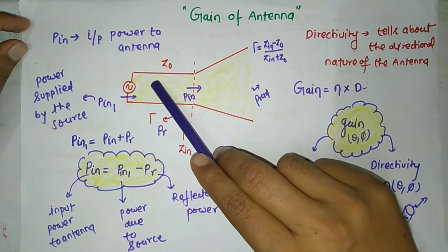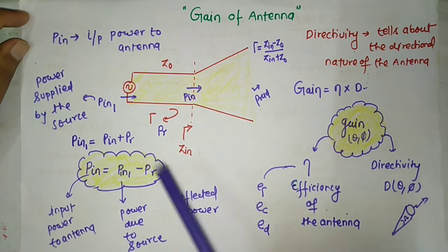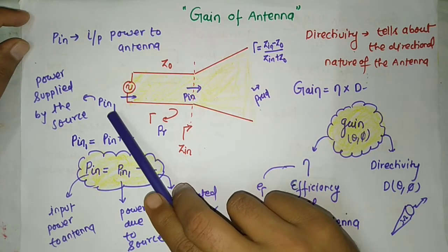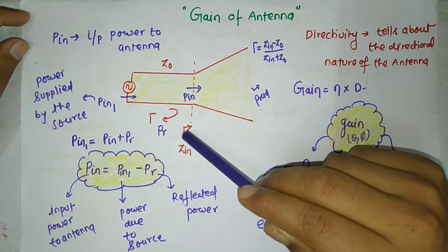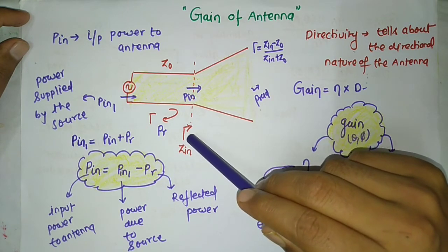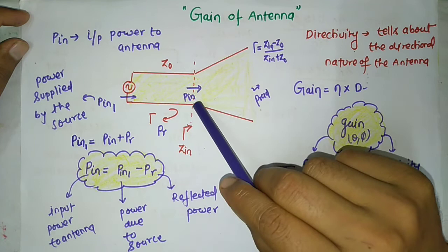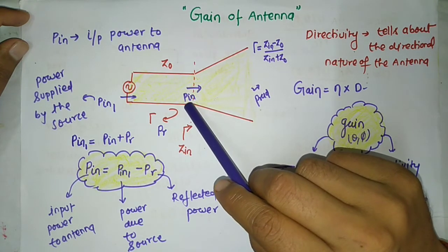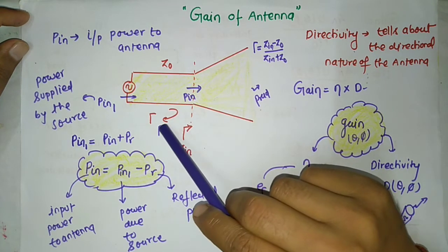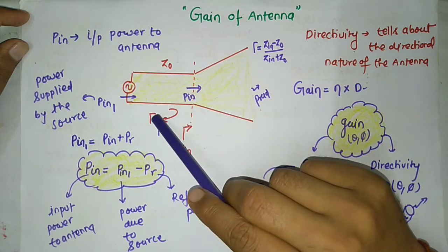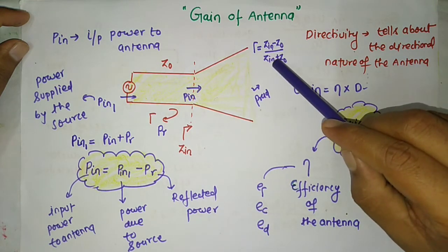The function of the transmission line is to guide power or energy along its length. Suppose the source is generating power P_in. If the antenna's input impedance Z_in is not equal to Z_naught, then there will be impedance mismatch, and power will reflect back. That reflected power is known as reflected power. The reflection coefficient gamma = (Z_in - Z_naught) / (Z_in + Z_naught).